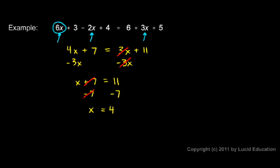That means 6 times 4 plus 3 minus 2 times 4 plus 4 is equal to 6 plus 3 times 4 plus 5. And 4 is the only number that works. 4 is the only number I could plug in for x in that equation and have it result in a true mathematical statement. 4 is the solution to this equation.